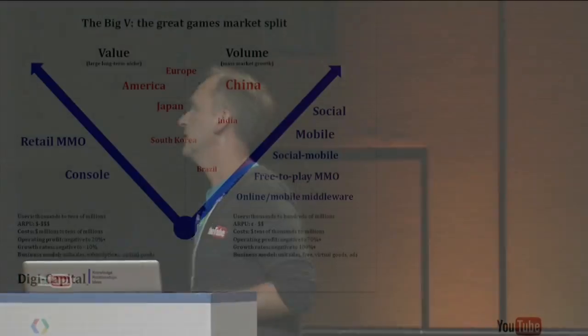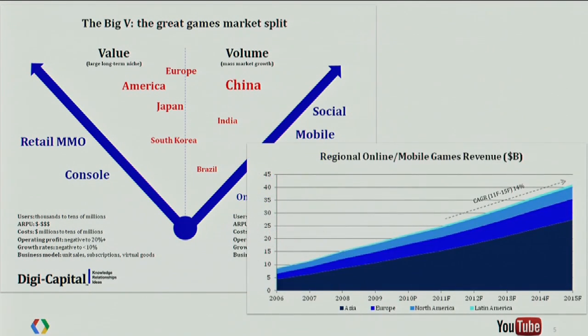Let's just look at the industry and what's happening. I'm using some stats from DigiCapital, who have allowed us to share this with you today. The market is kind of segmenting into two areas: value games, which is the traditional AAA titles and console games, and volume games. You see a lot of volume gaming picking up in emerging markets. Markets such as Japan and Korea are doing well with social and mobile games. That market is actually growing very fast — at a 14% growth rate. Most of that is actually happening in Asia and Europe.